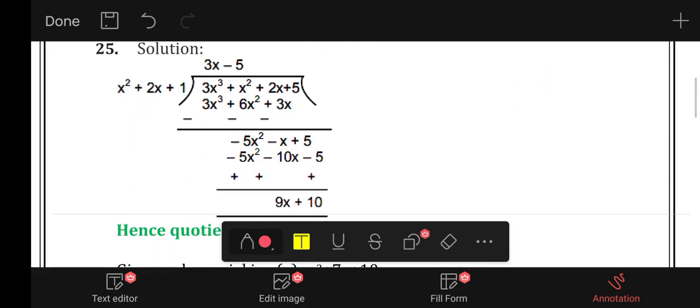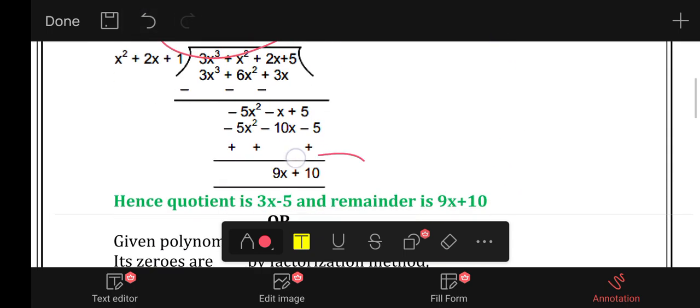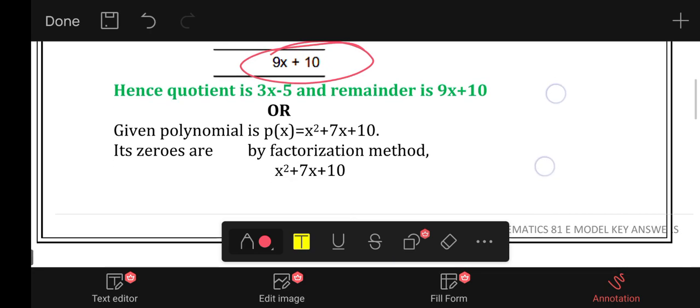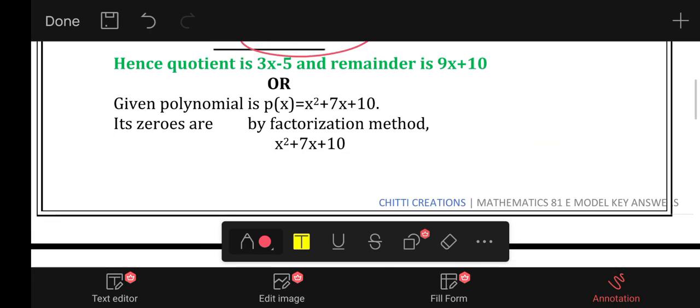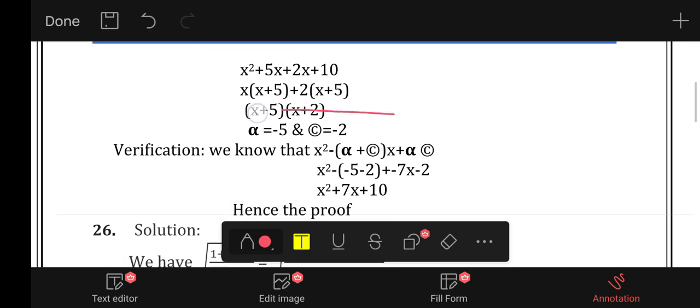Division problem: 3x minus 5, so 9x plus 10. Zeros of the polynomial, alpha sigma.